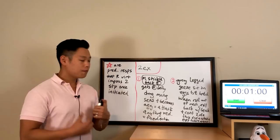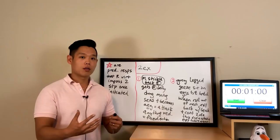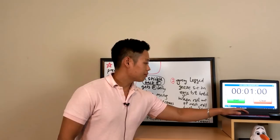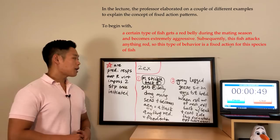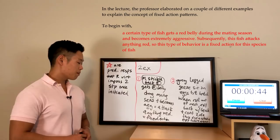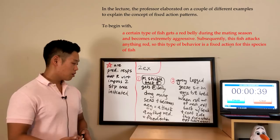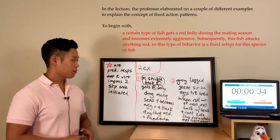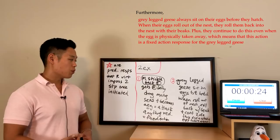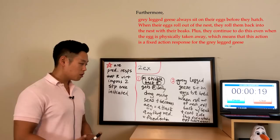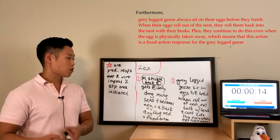Now let's listen to my sample response. 'In the lecture the professor elaborated on a couple of different examples to explain the concept of fixed action patterns. To begin with, a certain type of fish gets a red belly during the mating season and becomes extremely aggressive; subsequently this fish actually attacks anything red, so this type of behavior is a fixed action for this species. Furthermore, gray-legged geese always sit on their eggs before they hatch; when their eggs roll out of their nests they roll them back with their beaks, plus they continue to do this even when the egg is physically taken away, which means that this action is a fixed action response for the gray-legged geese. To sum up, these were two perfect examples of fixed action patterns given by the professor in the lecture. Thank you for your time and consideration.'